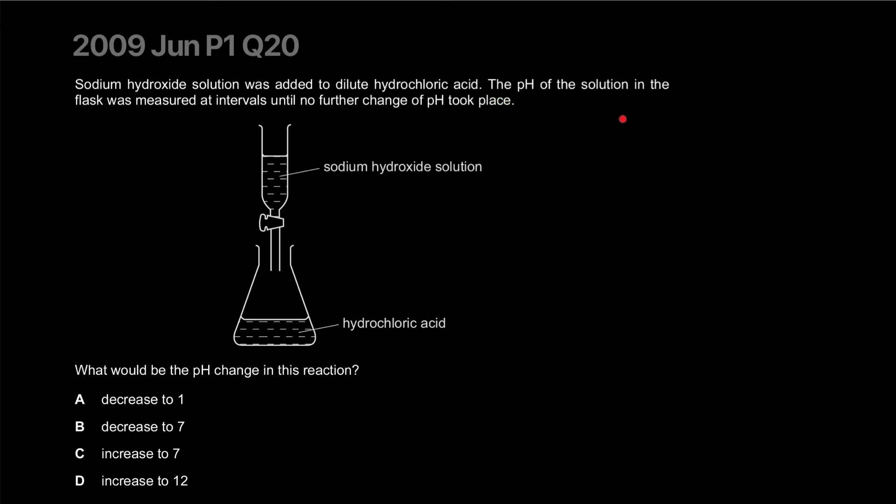Sodium hydroxide solution was added to dilute hydrochloric acid. The pH of the solution in the flask was measured at intervals until no further change of pH took place. What would be the pH change in this reaction? Okay, so it's probably going to be somewhere close to one, and once you add sodium hydroxide it's going to increase until no change is seen. So it's probably going to go to 14 or something, right? Sodium hydroxide is 13 or 14 generally.